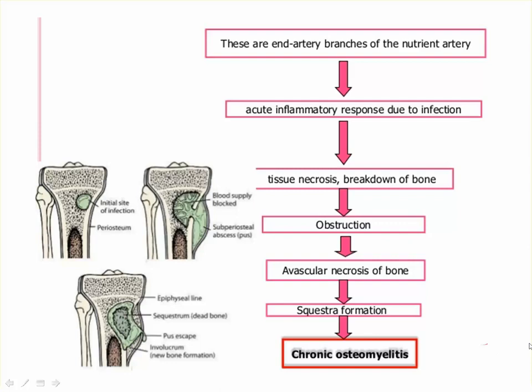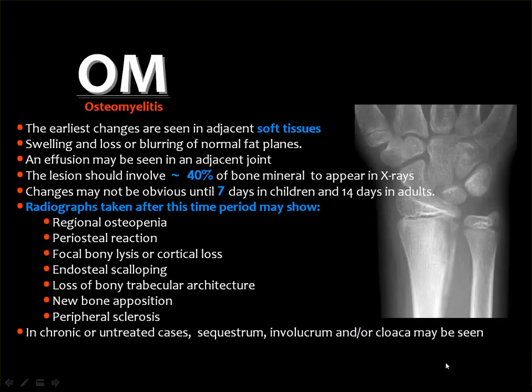When the organism reaches the bone, the nutrient arteries are considered end arteries. The bacteria initiate an acute inflammatory response resulting in tissue necrosis and breakdown, leading to obstruction of the vessel and consequently avascular necrosis of the affected bone — leading to dead bone known as the sequestrum. This marks the chronic stage following sequestration and new bone formation known as the involucrum.